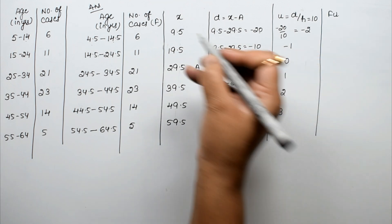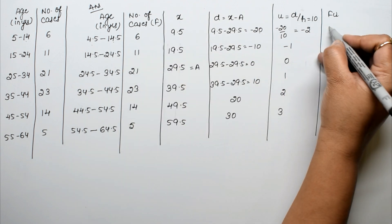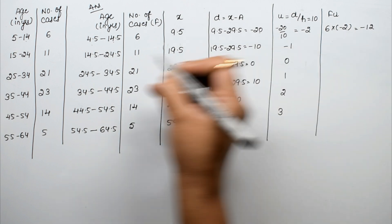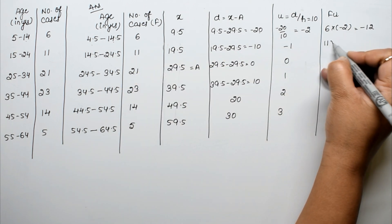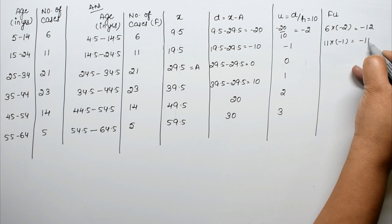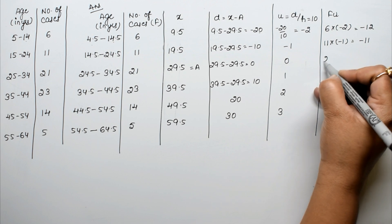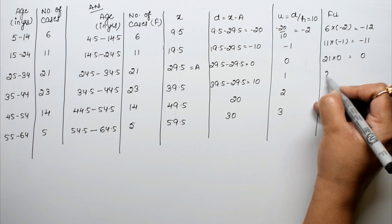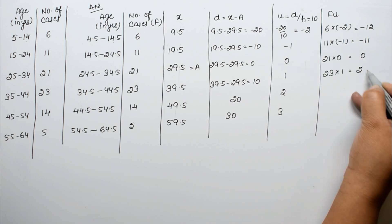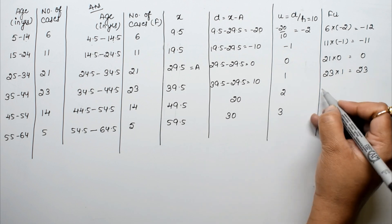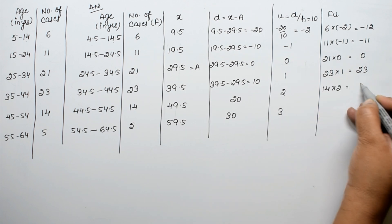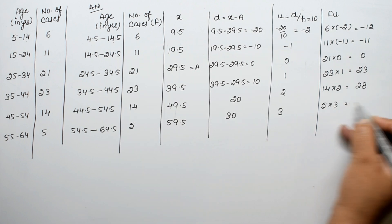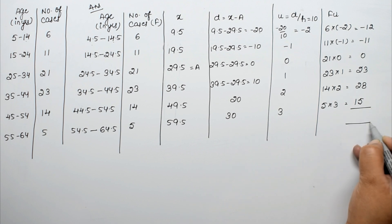Now we calculate fu (frequency × u). The values are: 6 × (−2) = −12, 11 × (−1) = −11, 21 × 0 = 0, 23 × 1 = 23, 14 × 2 = 28, and 5 × 3 = 15.